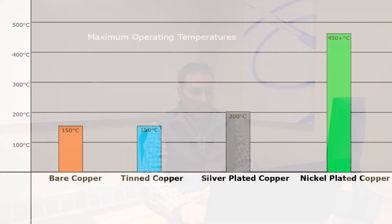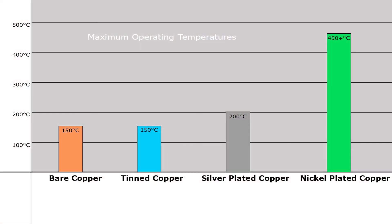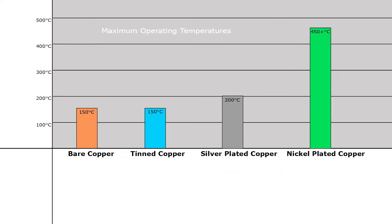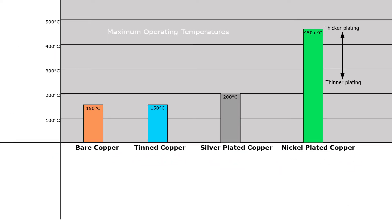Looking at our chart, the first characteristic is maximum operating temperature. Most standard cable applications can get away with the lower temp ratings of bare and tin copper. Where applications exceed 150 degrees C, you may want to consider silver plating or nickel plating. Note that for nickel plating, there is a range. Nickel plated copper comes in different plating thicknesses — the thicker the plating, the higher the temperature rating.